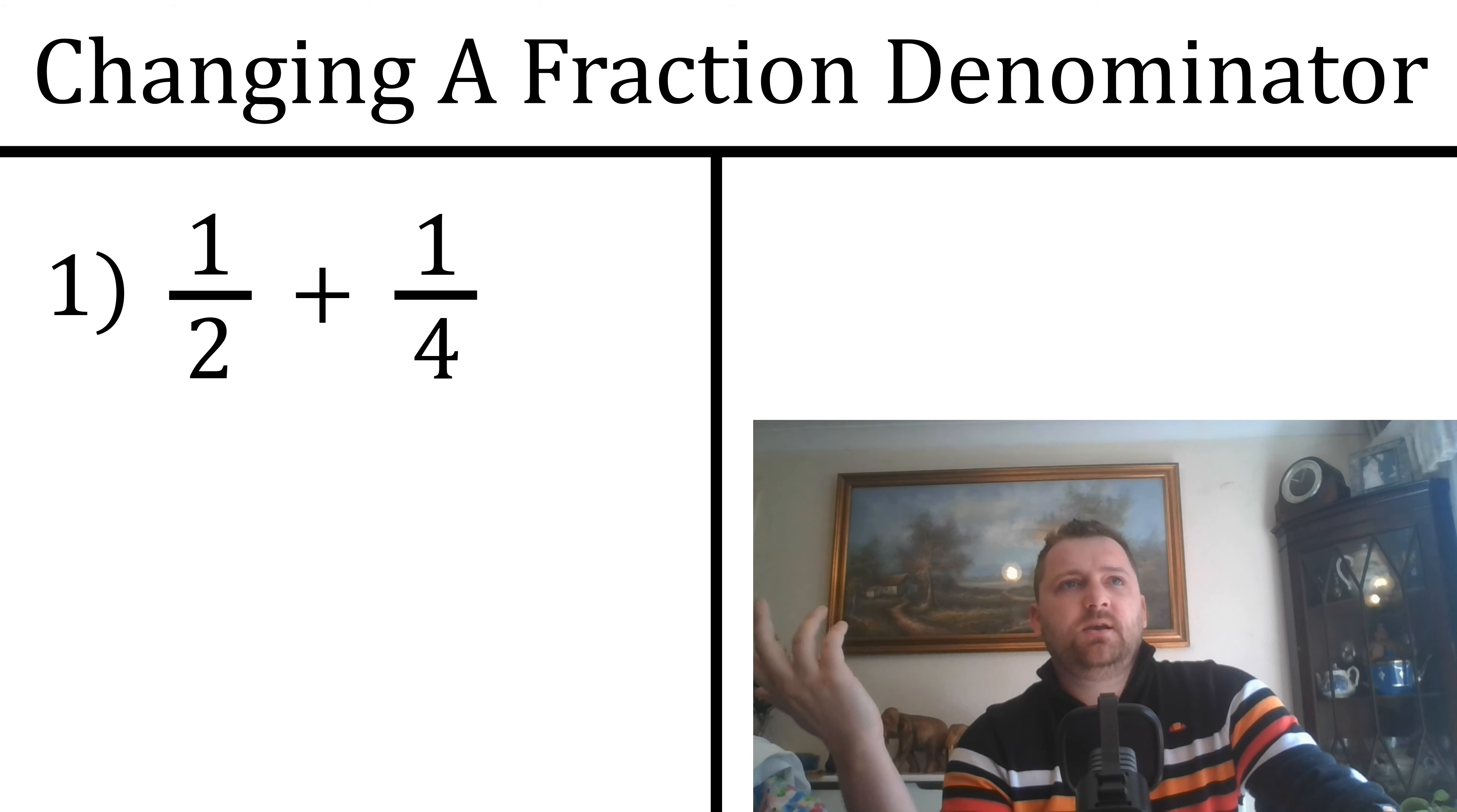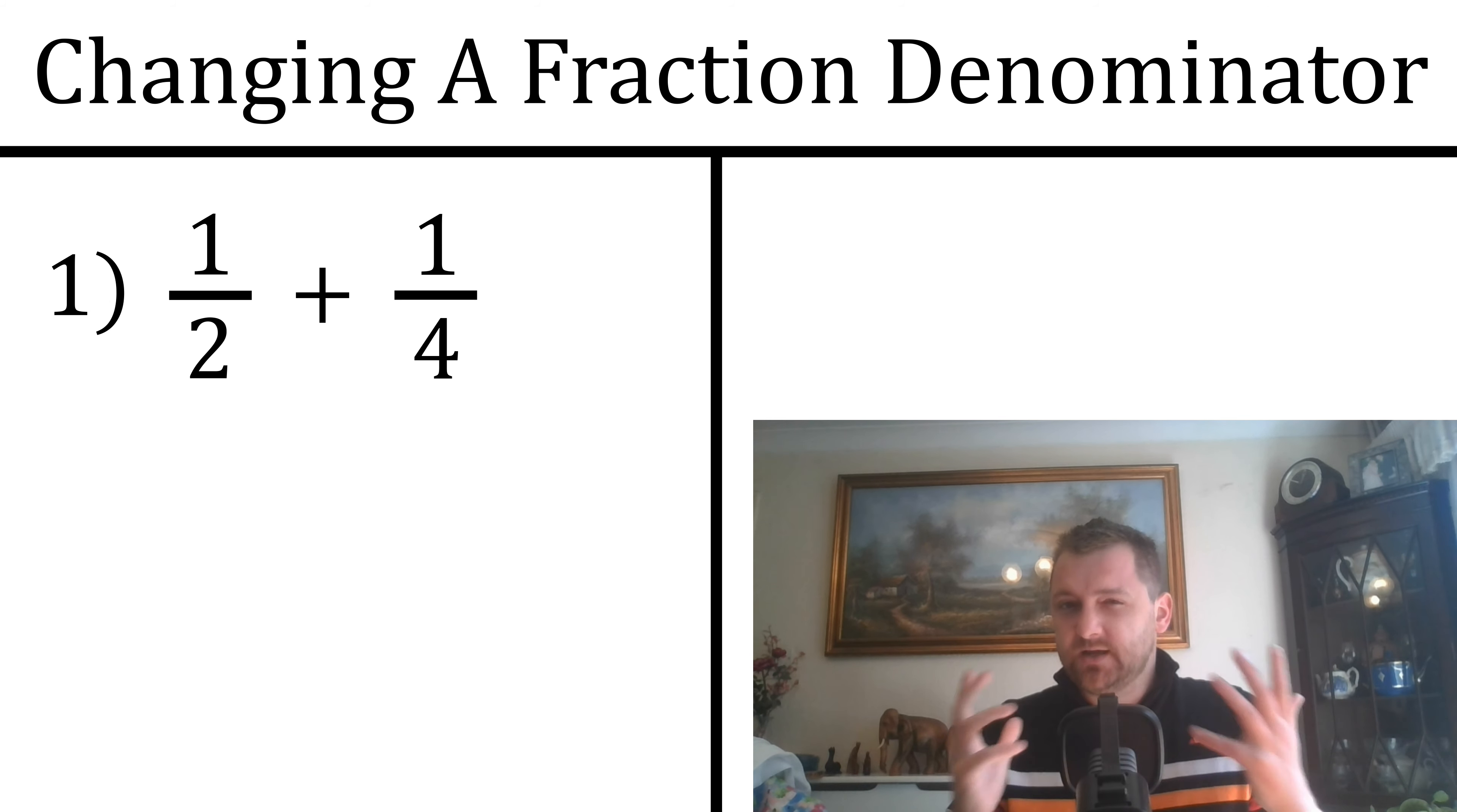If you have 3/4 and you times the top by 100 and the bottom by 100, it's 300/400. It's still the same value, just written differently. That means we can do different things with it. We can add it to a fraction that we might not have been able to add it to before.